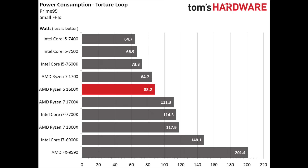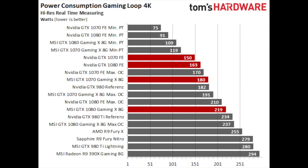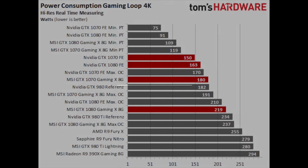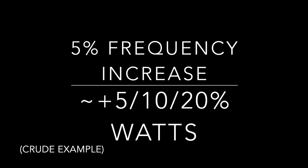For a Ryzen 5 1600 and GTX 1070 combo, that's roughly 90 watts plus 170 watts for a sum of 260 watts. This is a very low figure, and it would be unwise to use a 260-watt power supply. Overclockability, whether the graphics card is reference or AIB, and how many other components are in the system must be accounted for. Overclocks tend to drastically increase power consumption — a 5% frequency overclock might raise power by 5%, the next 5% by 10%, then 20%, and so on. They are not linear.